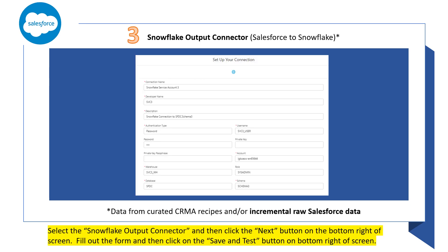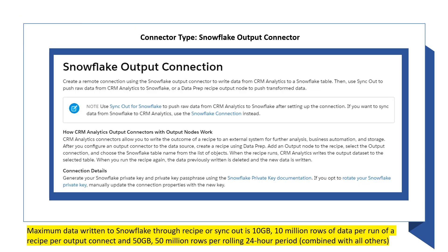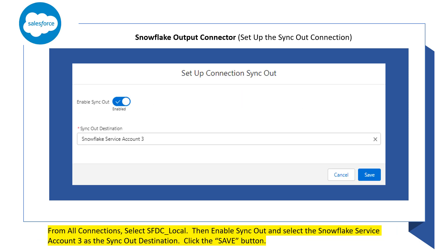And now finally, let's create an output connector to sync data from Salesforce to Snowflake. We can use the Snowflake output connection to move or insert into Snowflake data from curated CRMA recipes and/or incremental raw Salesforce data. In this video, I'll be demonstrating the latter option. If you have a use case for the Snowflake output connection, you'll want to review the considerations and limitations. Once you've set up the connection, you'll go back to all connections and select the SFDC local connection that was already created for you by Salesforce.